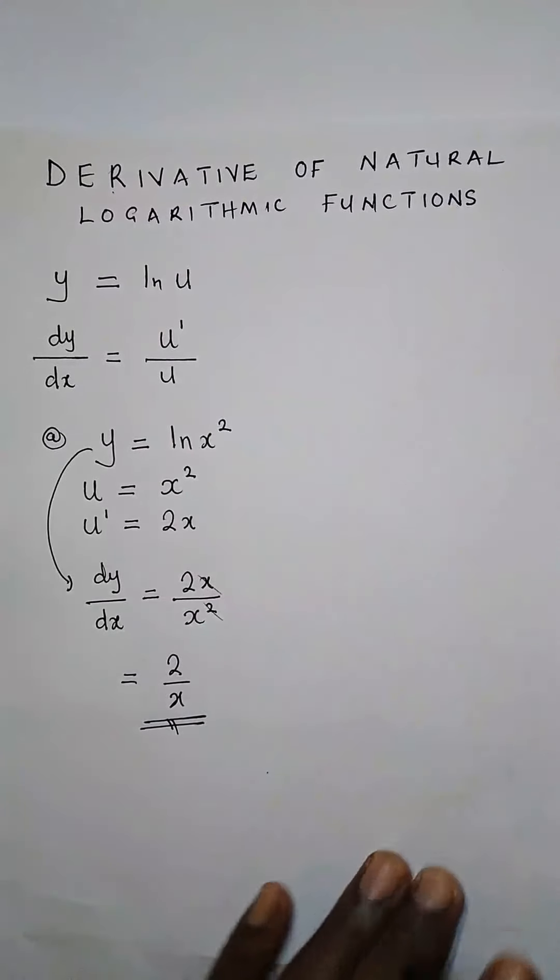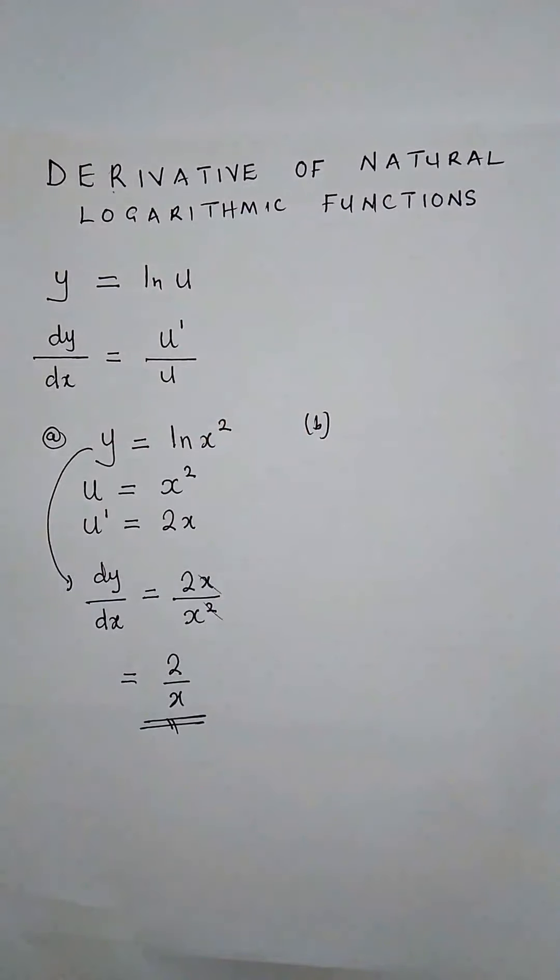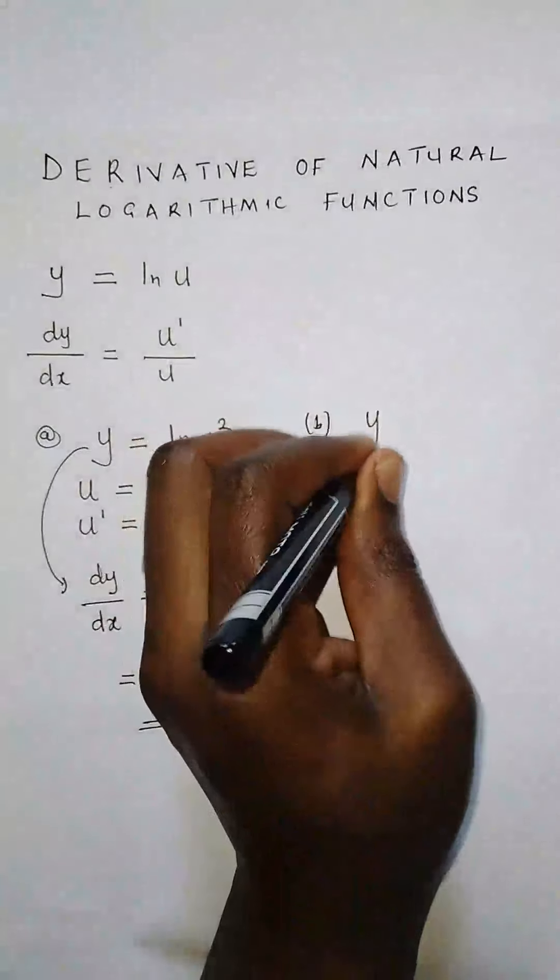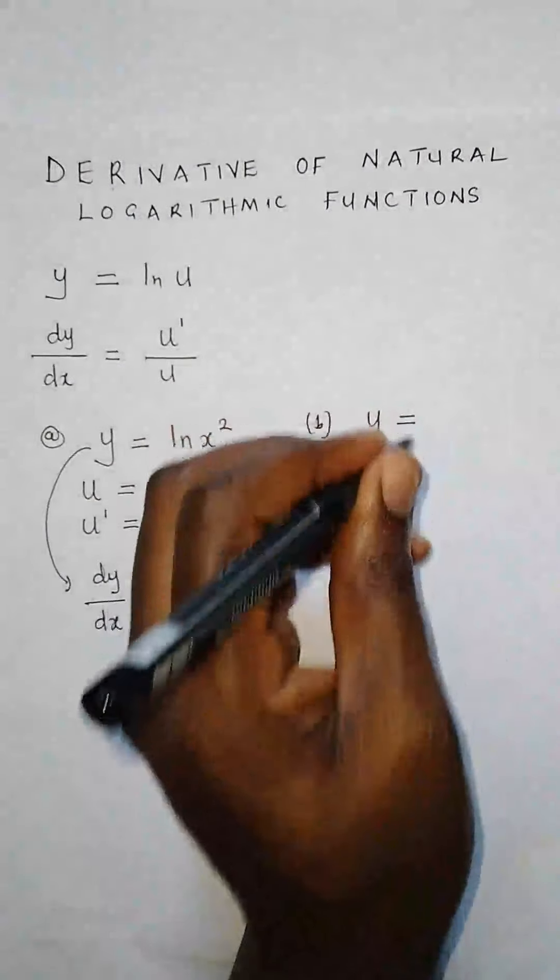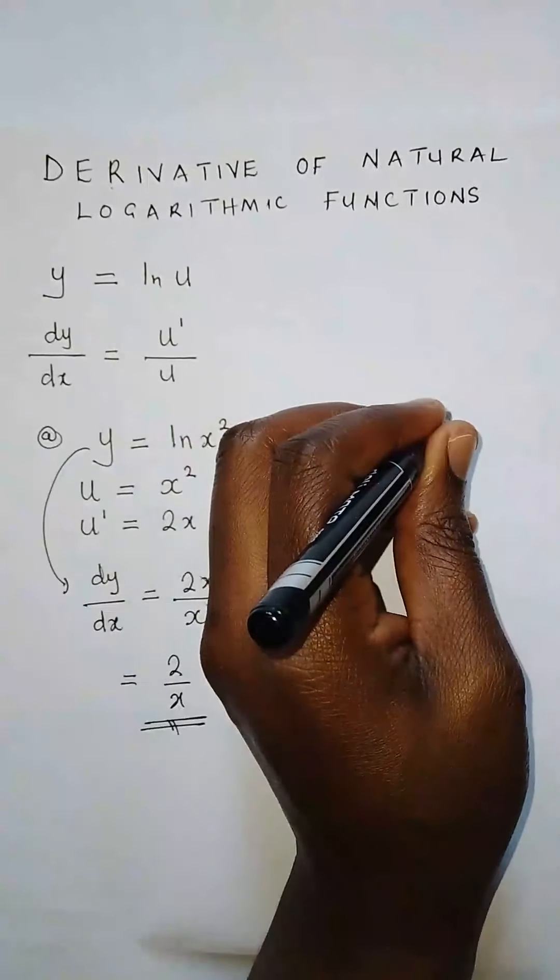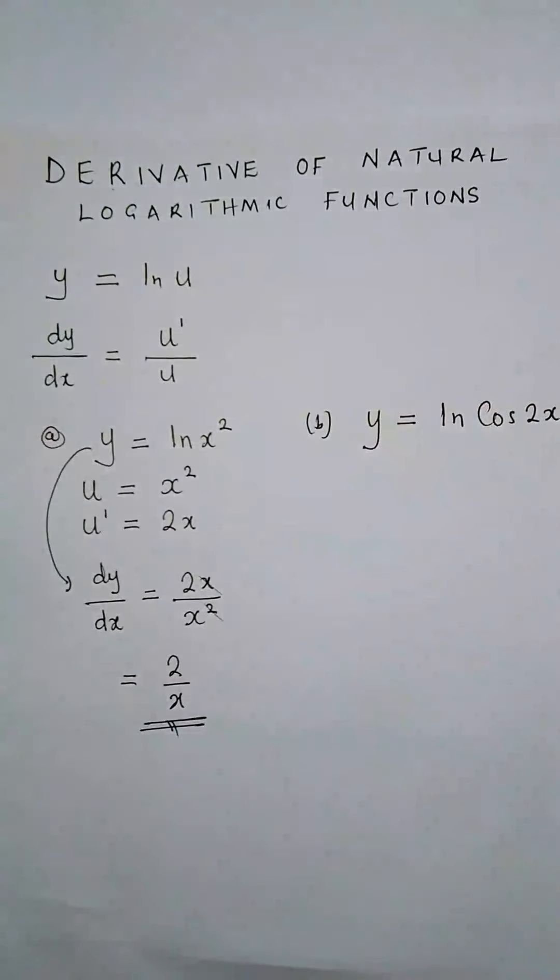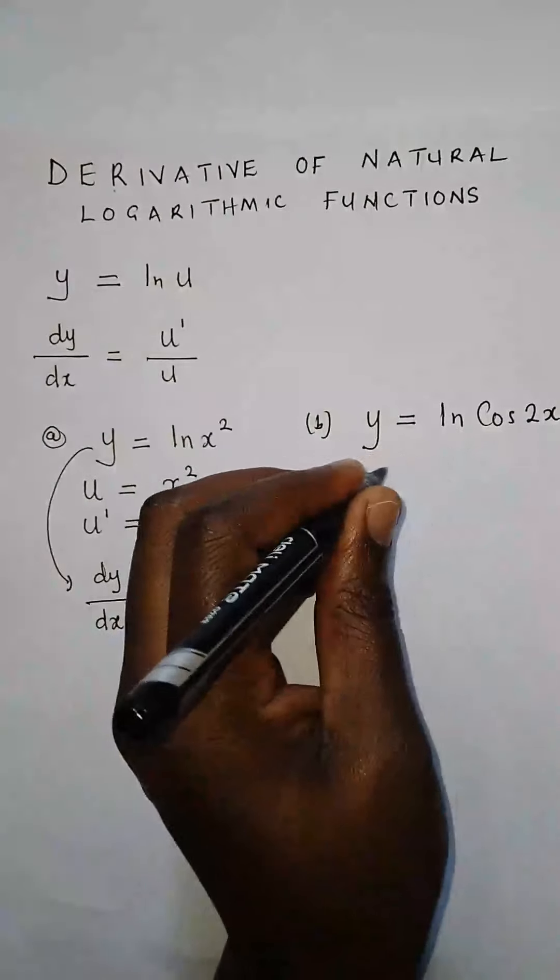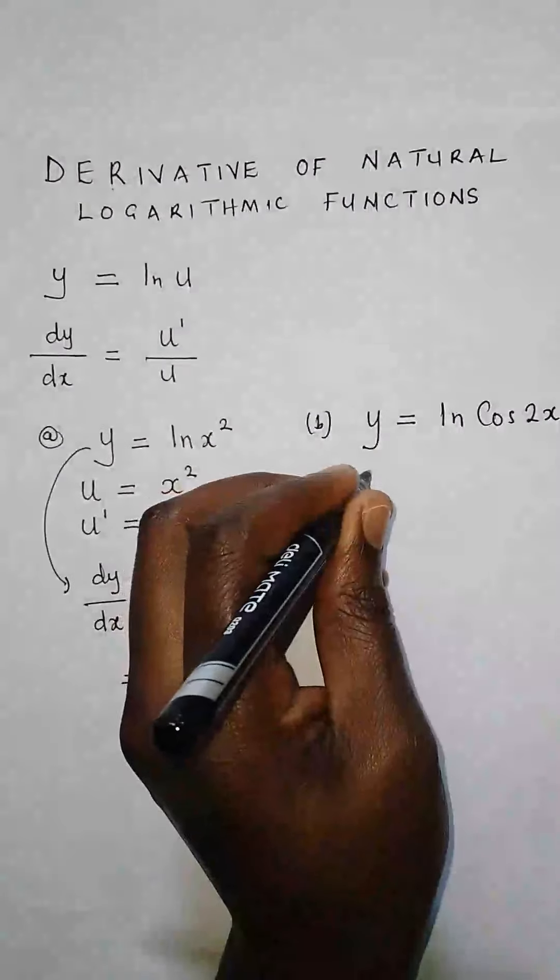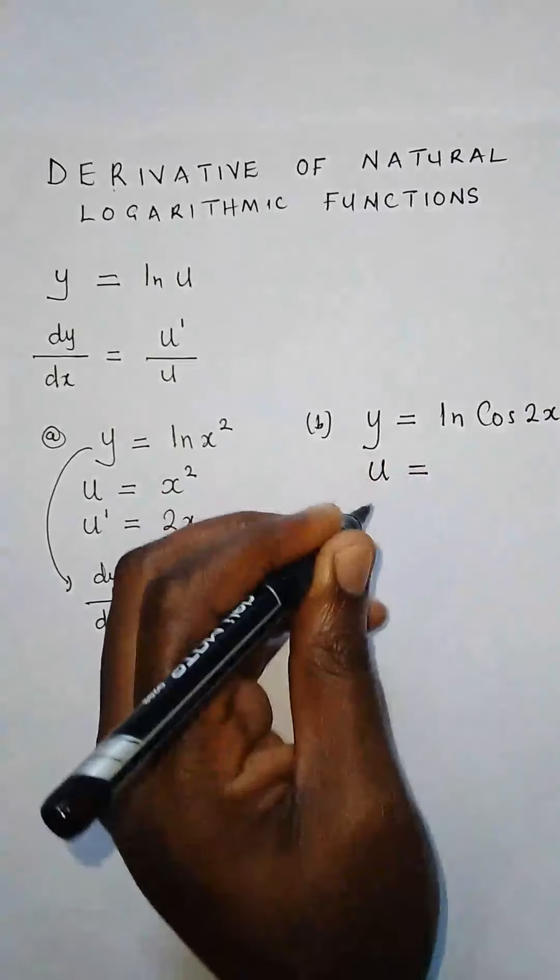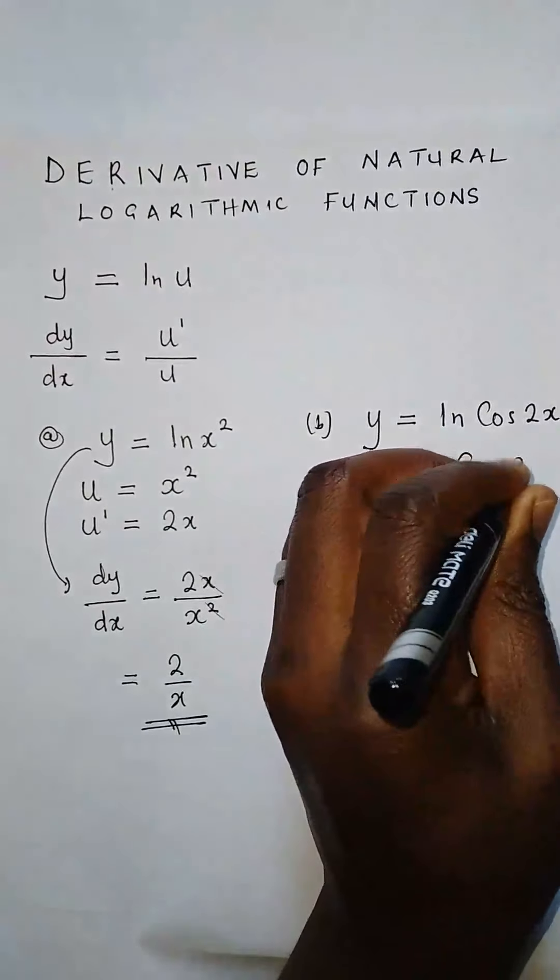Then the next one, let's have something involving a trigonometric function. Let's say we have y equals ln cos 2x. That was looked at in detail when we were looking at derivatives of trigonometric functions, so this is going to be easier for us because we are going to apply something we have learnt. Identifying our u, the first thing is to identify our u. So u equals cos 2x.